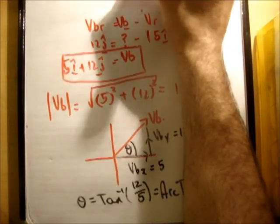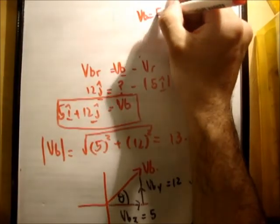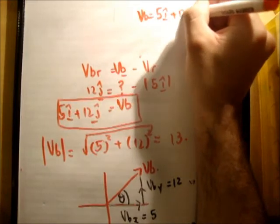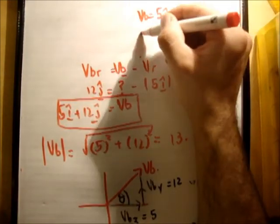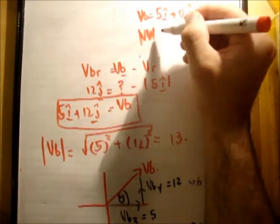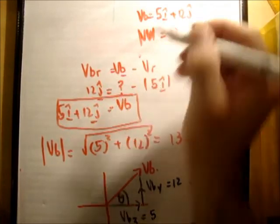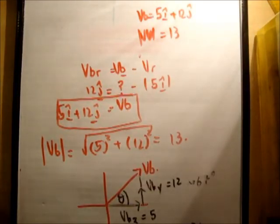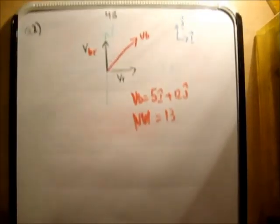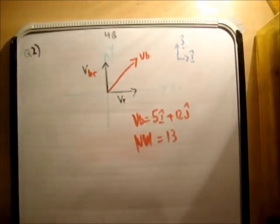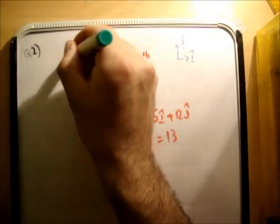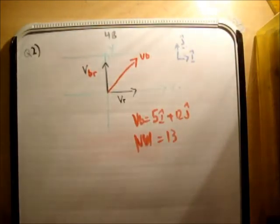So VB is equal to 5i hat plus 12j hat, and the magnitude of VB is equal to 13. Now I'm just going to rub out what we don't need here, just to finish off this question. Alright, so the next thing we need to know is, of course, the bank is parallel, the opposite side is parallel to it like that. And we're given that it is 60 meters wide. So it's 60 meters from here to here.